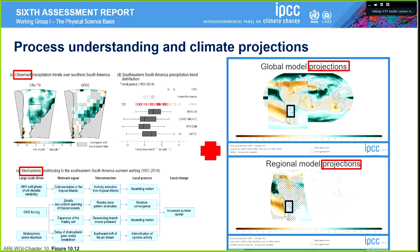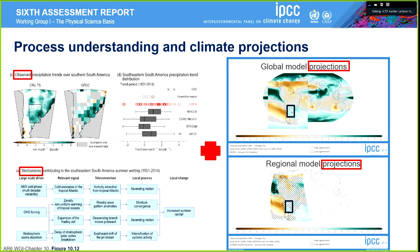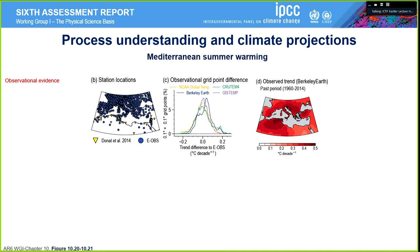We can use all this information and then move to process understanding and climate projection. Once we have the observation and the attribution, what about the projection? Can we understand why our climate models are telling us that, for example, in the Southeast South America region there would be an increase of precipitation in the future? These are the projections coming from global models and regional models. I need to use all of them and reconcile them with the observations. I need a mechanism — an understanding of what is happening there. If I have all three, together with the attribution, then I can be sure that the projected signal is with high confidence. I can do this also for another region, like the Mediterranean.